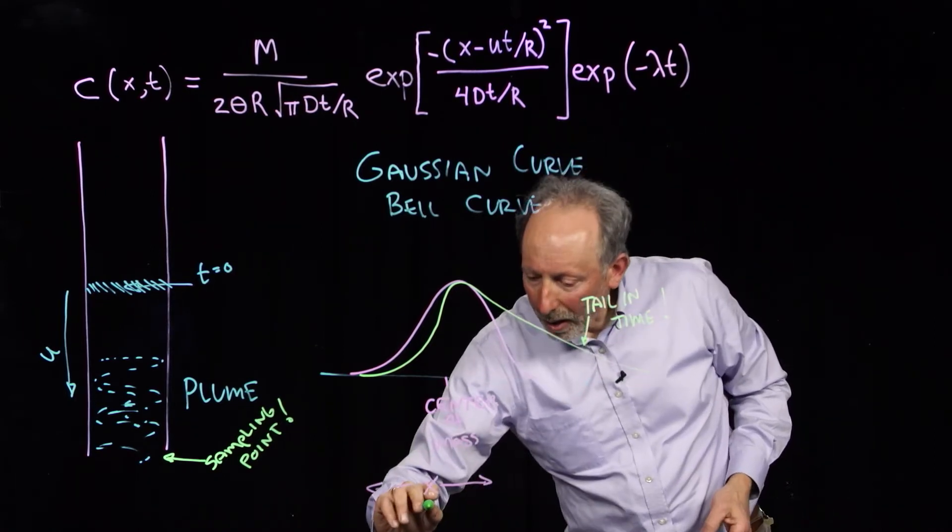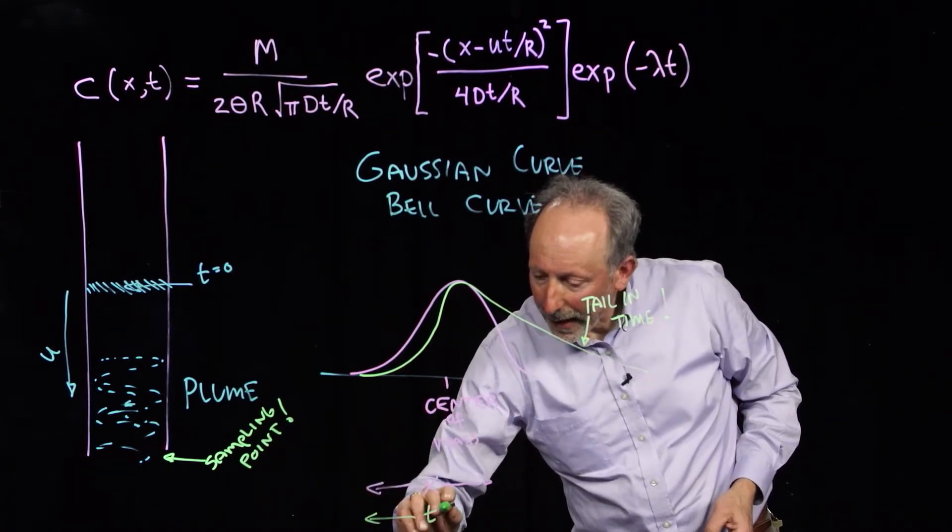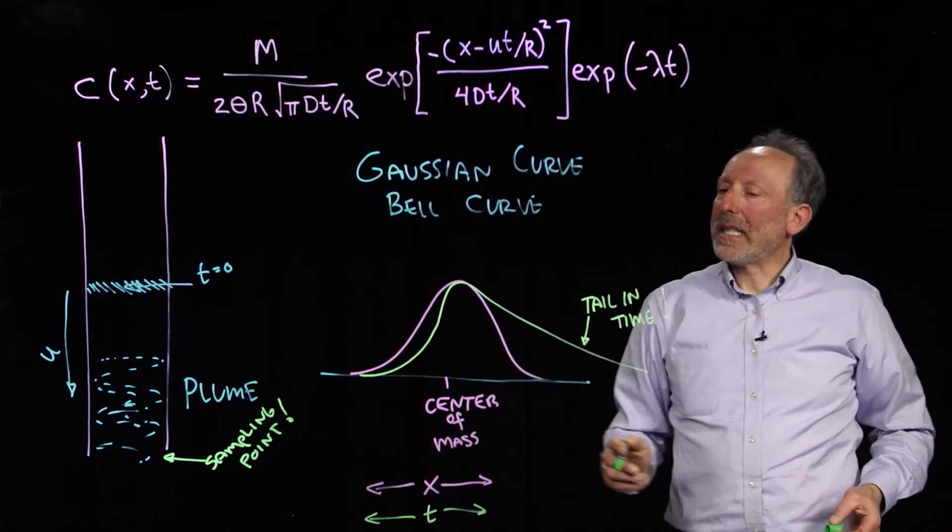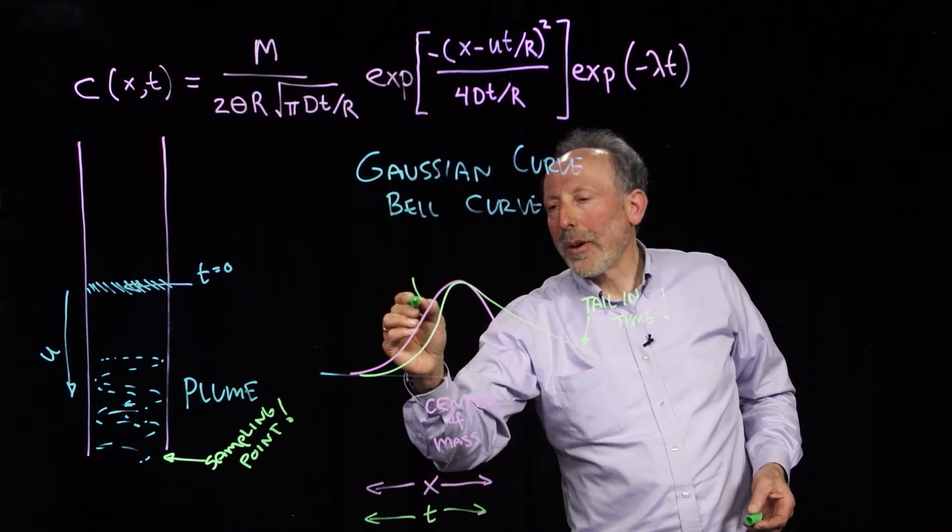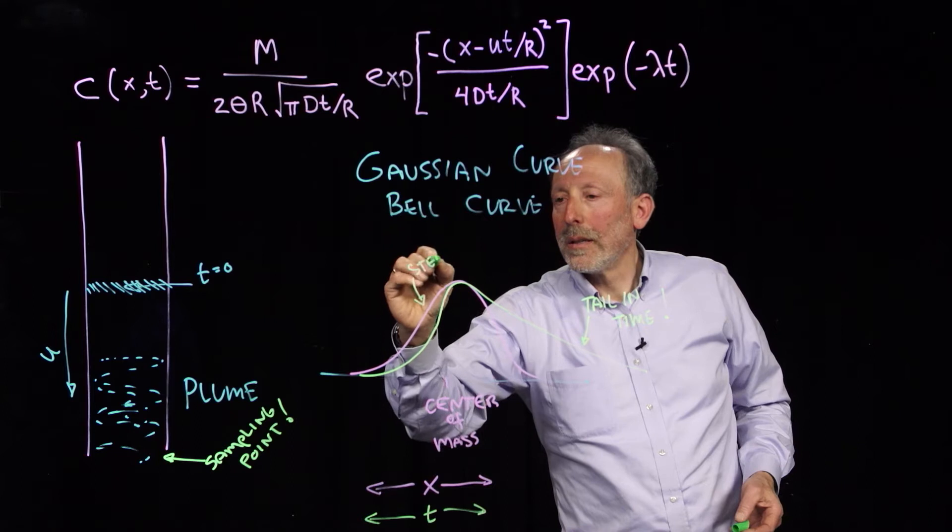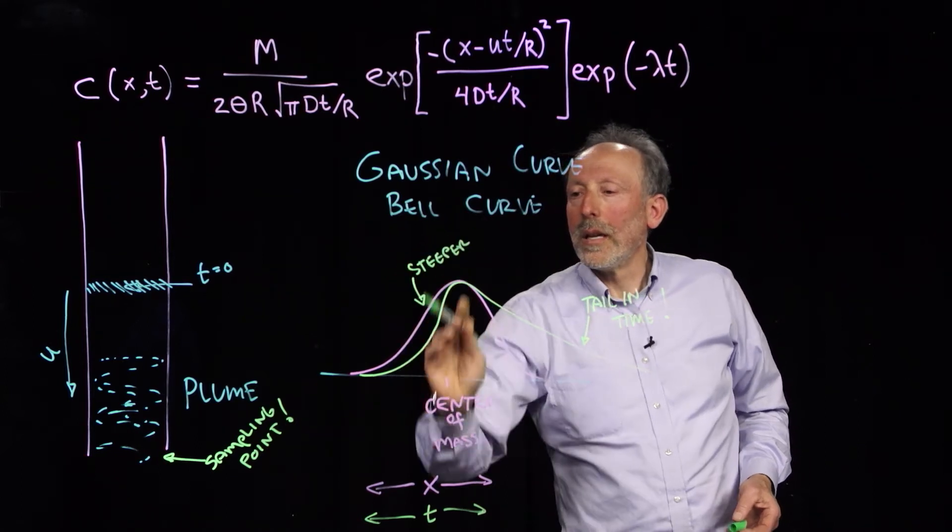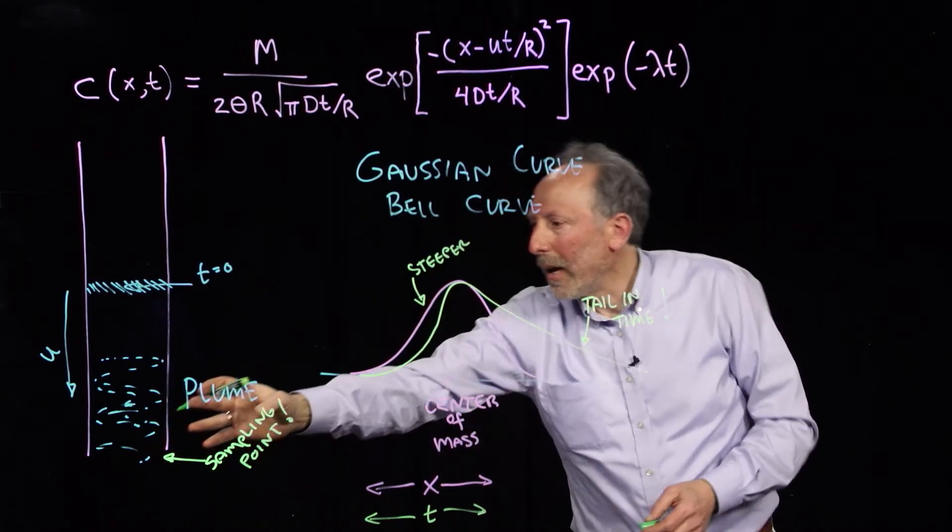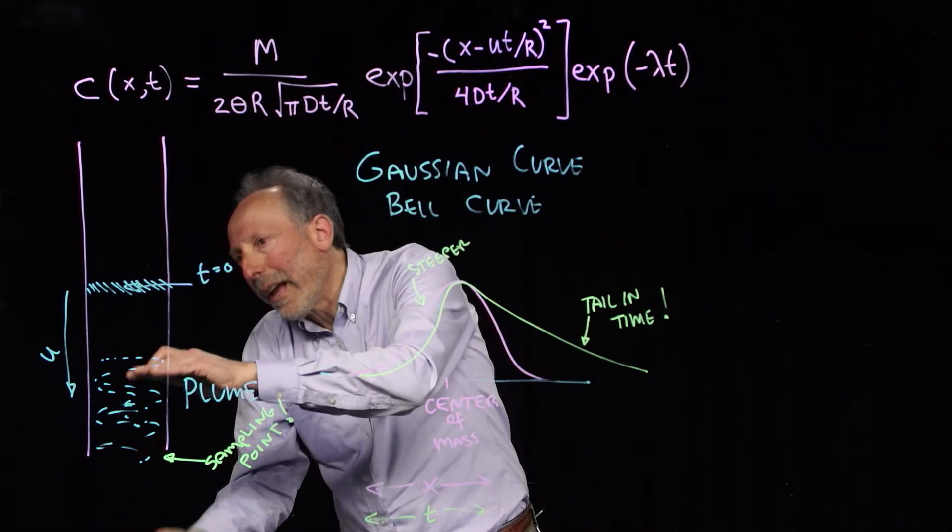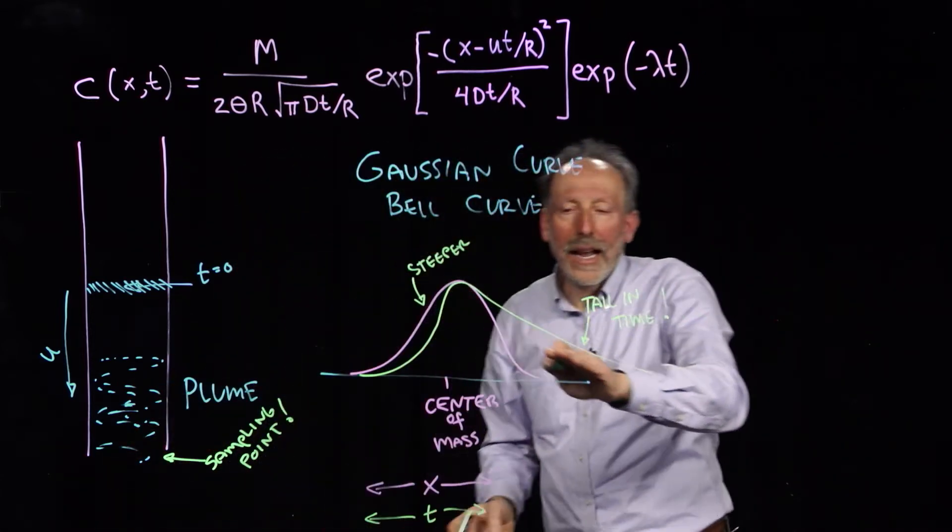So when we do time as our axis, what we see is that it's steeper as we first start seeing the plume. But then, as this plume keeps on spreading, as it's going by, it has a longer tail.